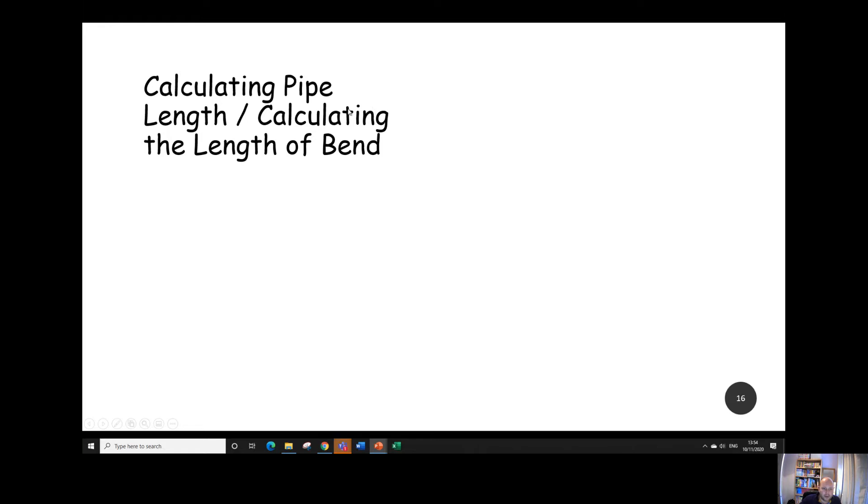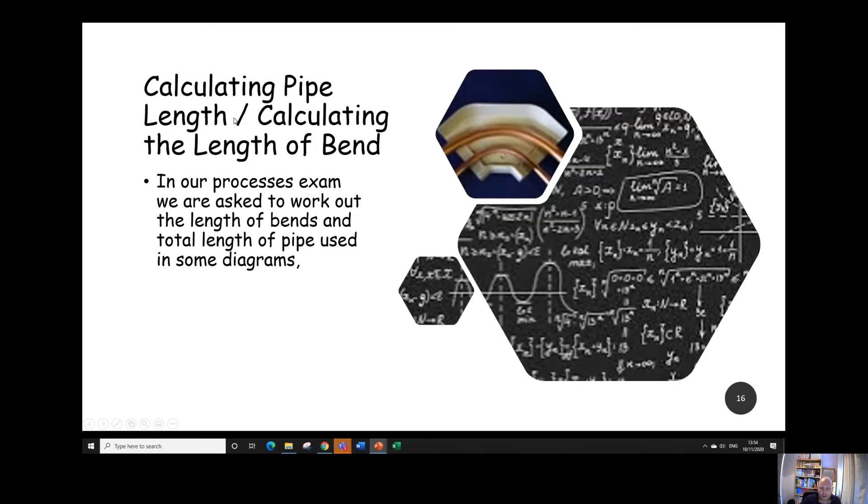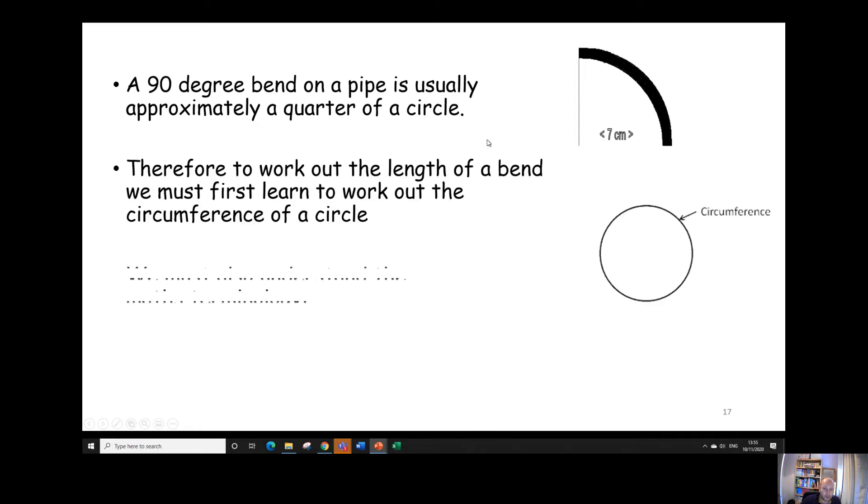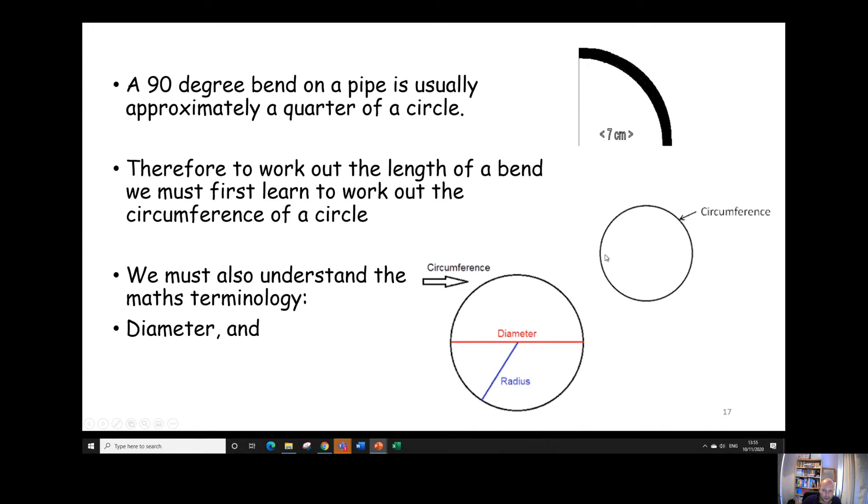Right, now we're going to look at calculating the length of the bend or calculating pipe length. They always ask a question about this in the test every single year. So we need to make sure that we know how to do it. So a 90 degree bend is essentially a quarter of a circle. There's 360 degrees in a circle. So a 90 degree bend would be one quarter of a circle. To work out the length of the bend, if we can work out the total circumference of a circle and then divide it by four, that would get us the length of a 90 degree bend.